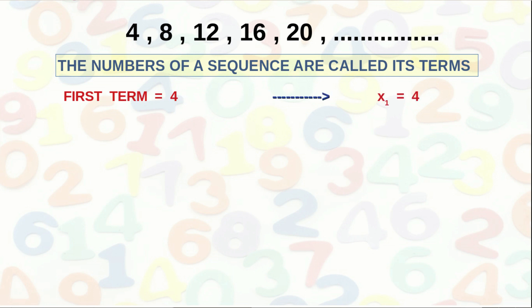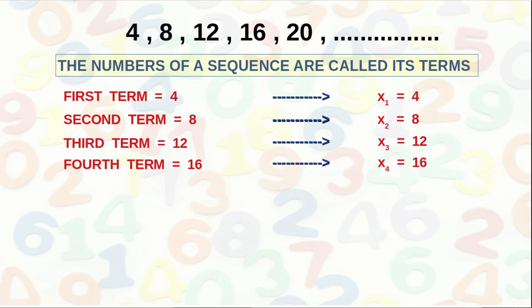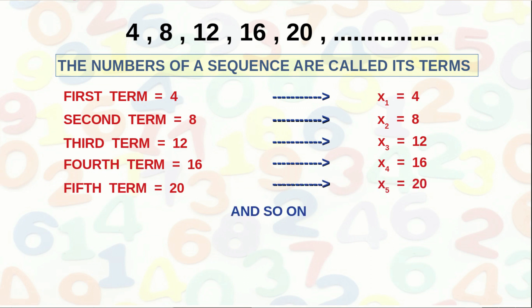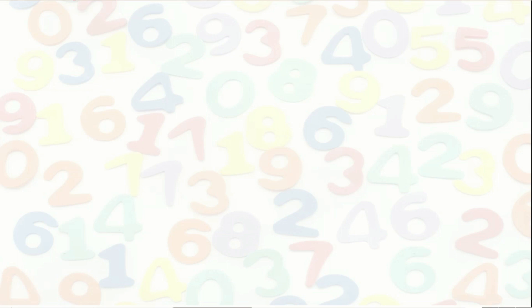Using algebra, we can write this as x1 = 4, x2 = 8, x3 = 12, x4 = 16, x5 = 20, and so on. Here 1, 2, 3, 4, 5, etc. are the positions of the terms, and the terms are 4, 8, 12, 16, 20, and so on. In general, we can write a number sequence as x1, x2, x3, x4, x5, and so on.